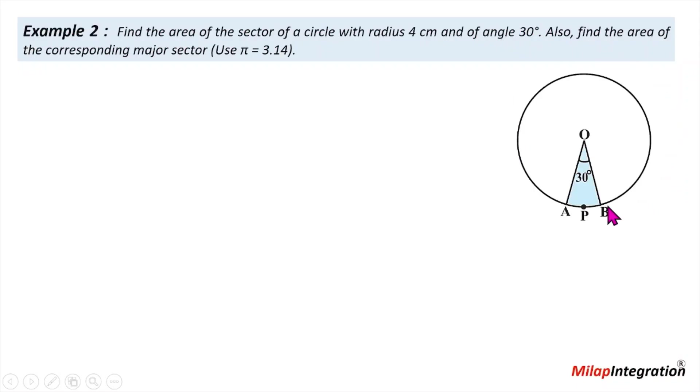That means, a sketch. A circle O, A, B is a sector which angle is 30 degrees and radius is 4 cm.